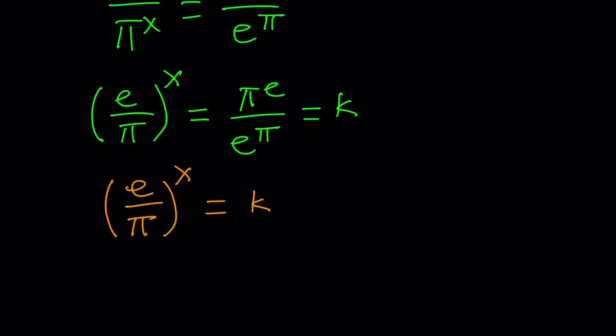By the way, e is Euler's number. That's a very special number because Euler is a very special mathematician. He's just amazing.